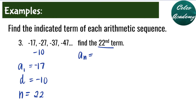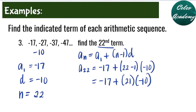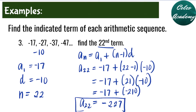Using the arithmetic sequence formula a sub n equals a sub 1 plus n minus 1 times d, we are solving for the 22nd term, so a sub 22. Our a sub 1 is negative 17, plus n is 22 minus 1, multiplied by the common difference of negative 10. Simplifying: negative 17 plus 21 times negative 10 equals negative 17 plus negative 210, which equals negative 227. That is our 22nd term.